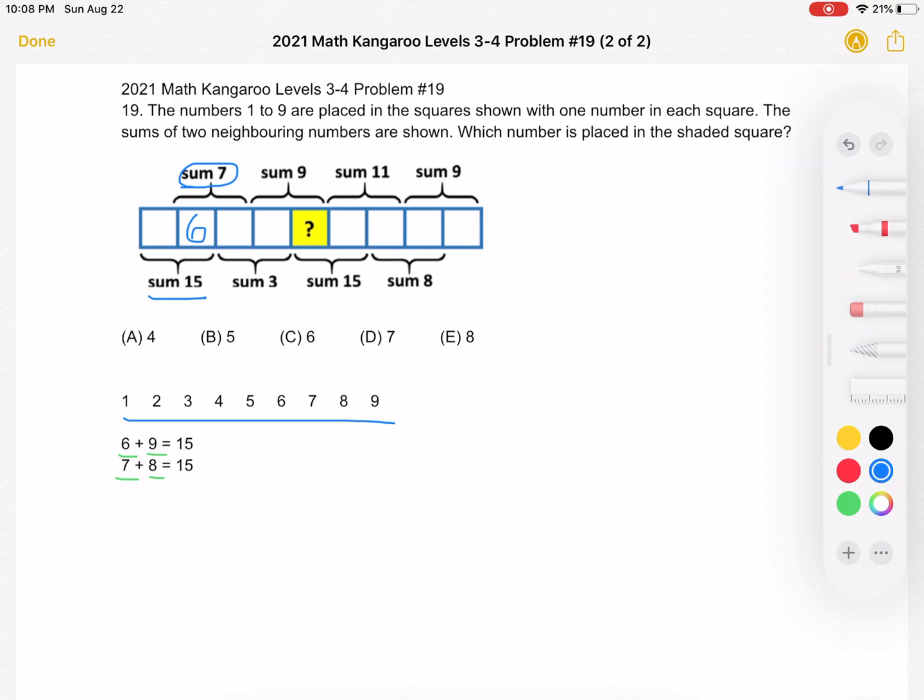So we figured out that that square must be occupied by a 6. Now we just need to work backwards and we can figure out the entire problem.